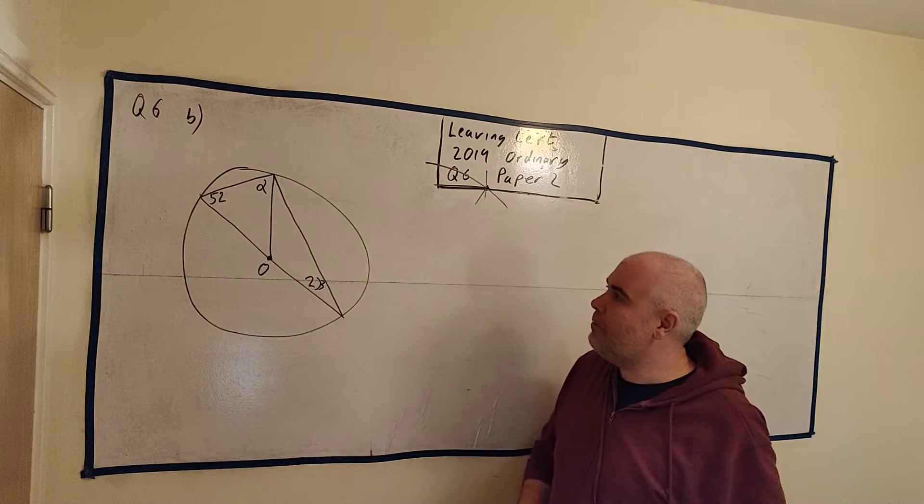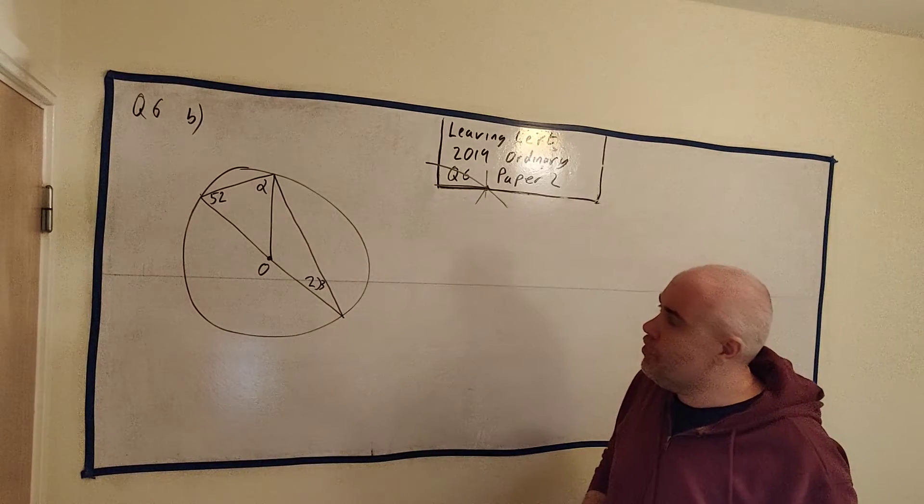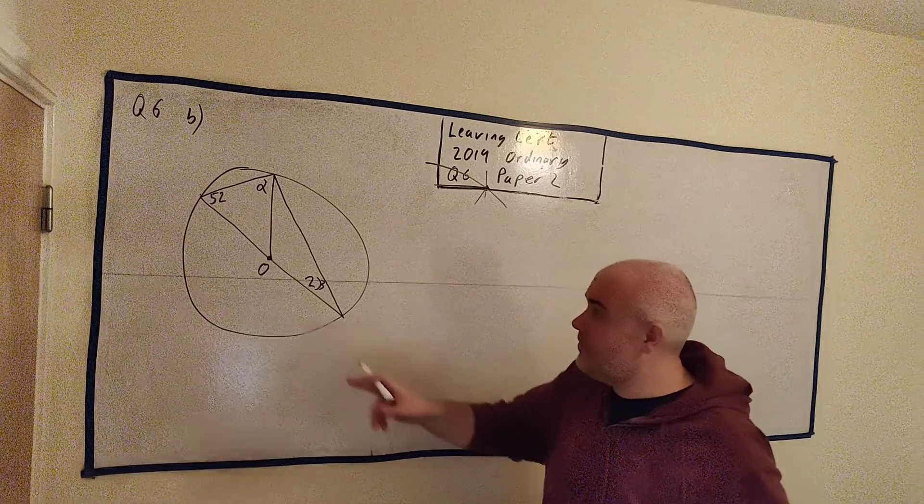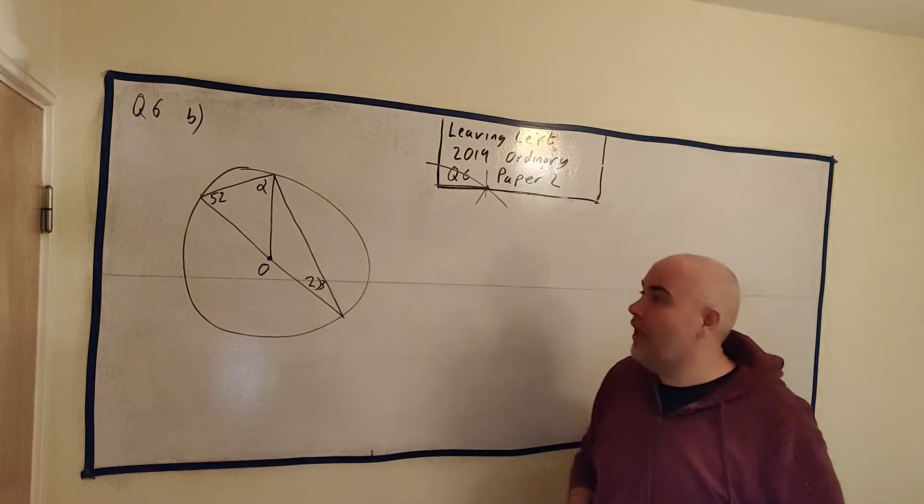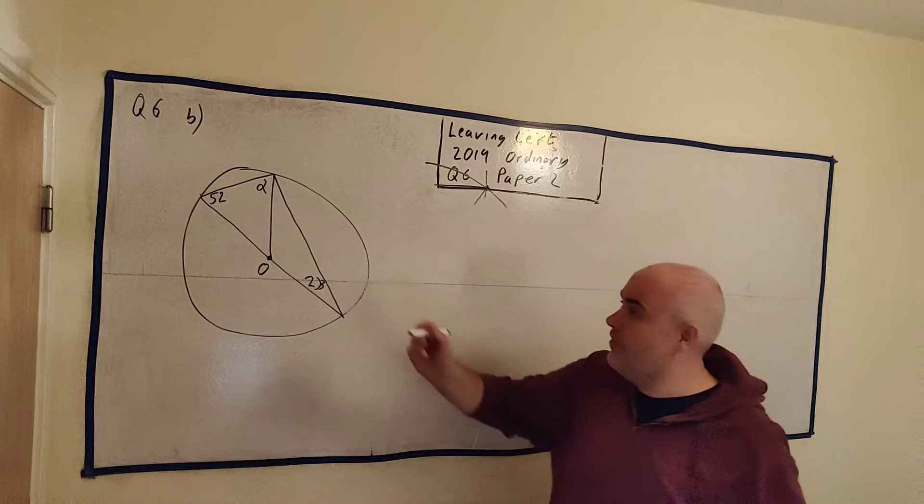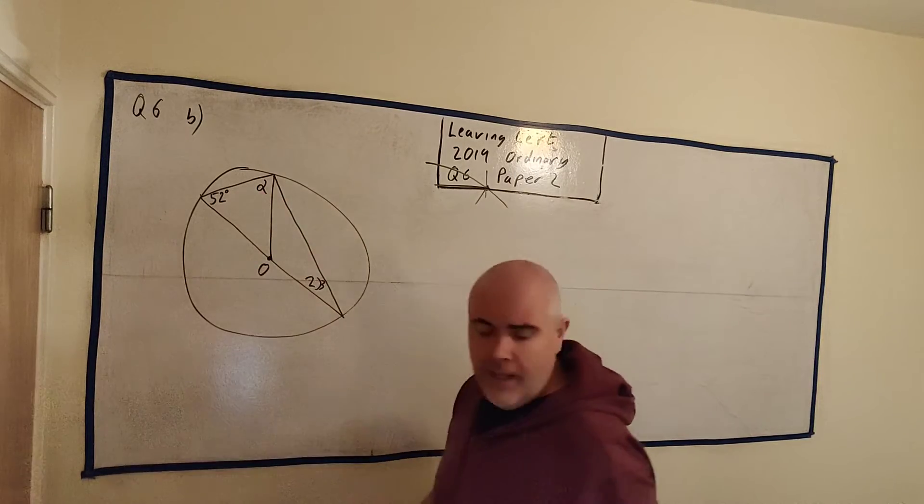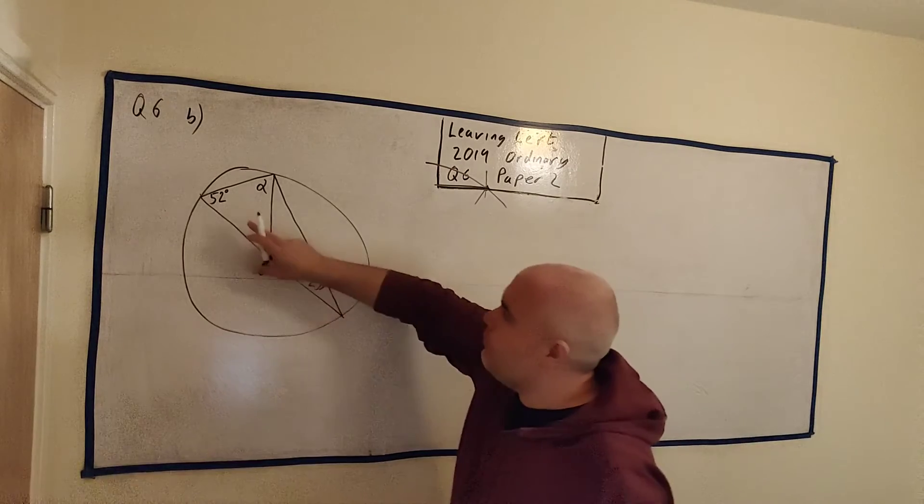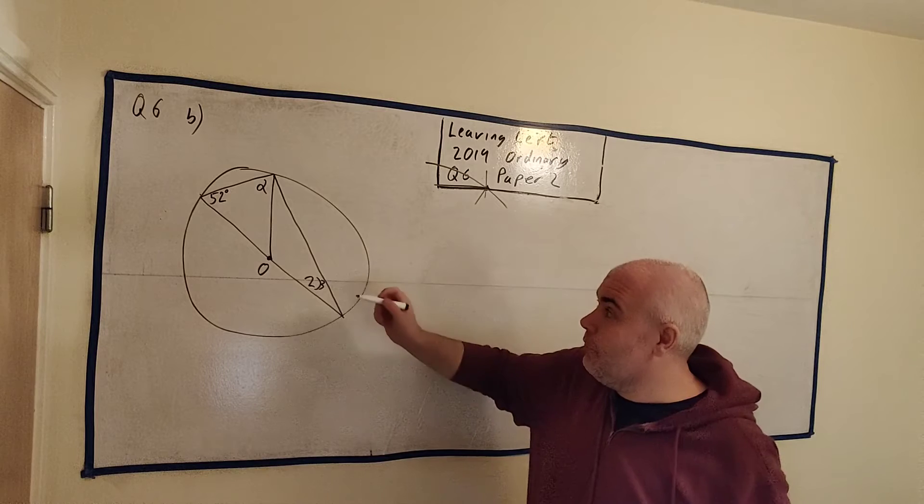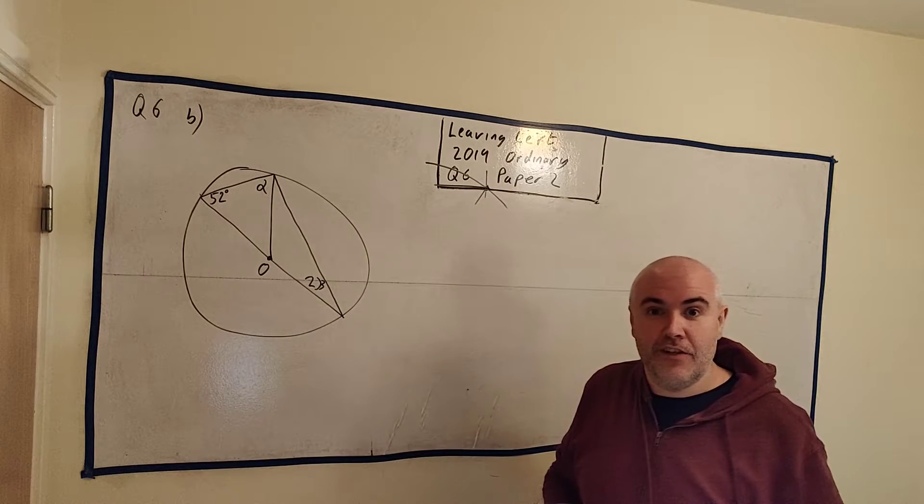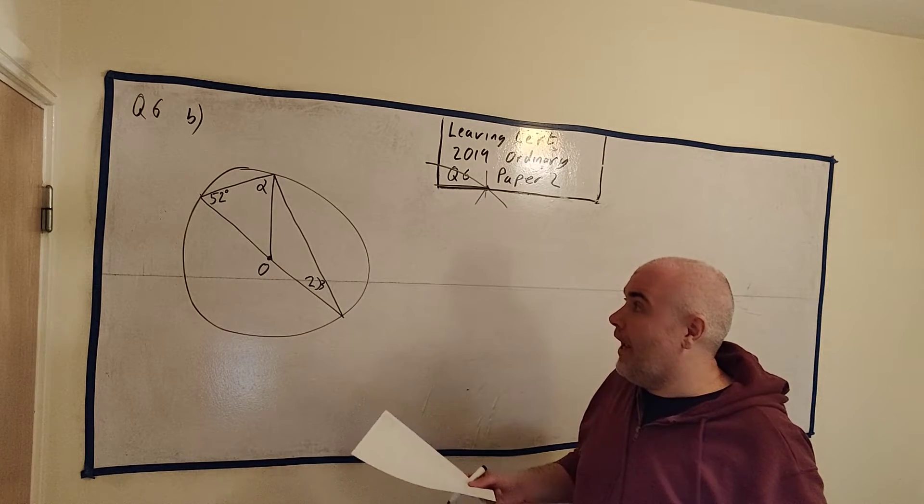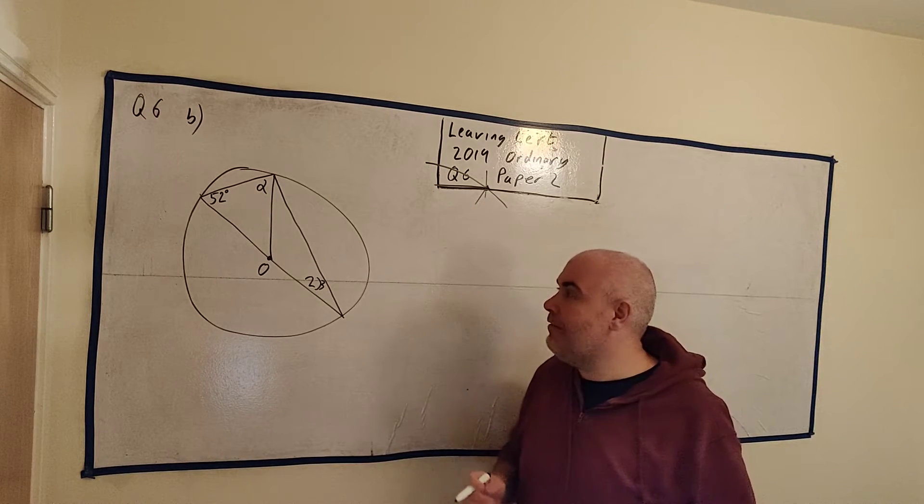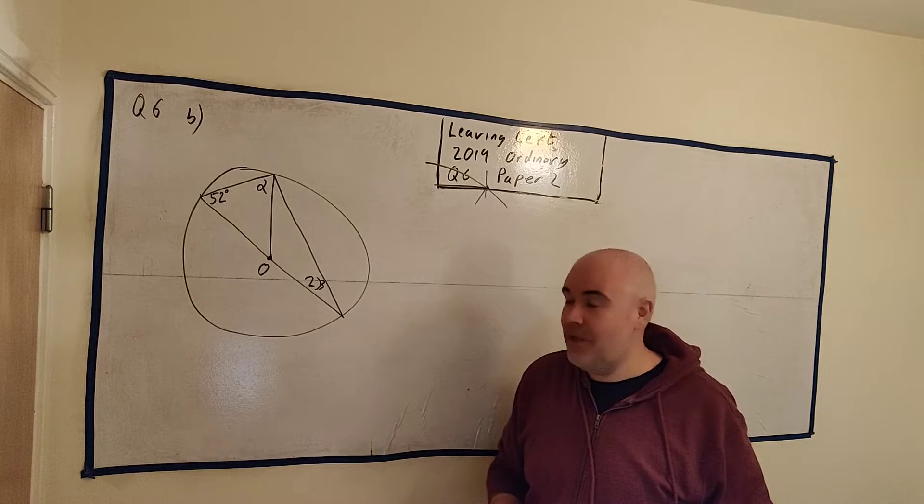I'm going to rub this out and we'll do part B. Here we have part B, and again apologies for the crude drawing. I'm doing my best. This question simply asks us to find alpha and beta. Find out what angles are these. 52 degrees is written in there, and that's all the measurements we get. No more lengths, no more angles. But it really does have so much information here.